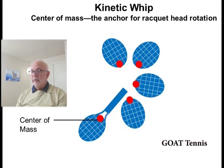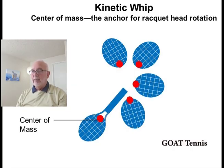This is a simple diagram showing how the center of mass of the racket acts as an anchor in the rotational swinging movement. The racket head will want to swing or rotate around this anchor point.